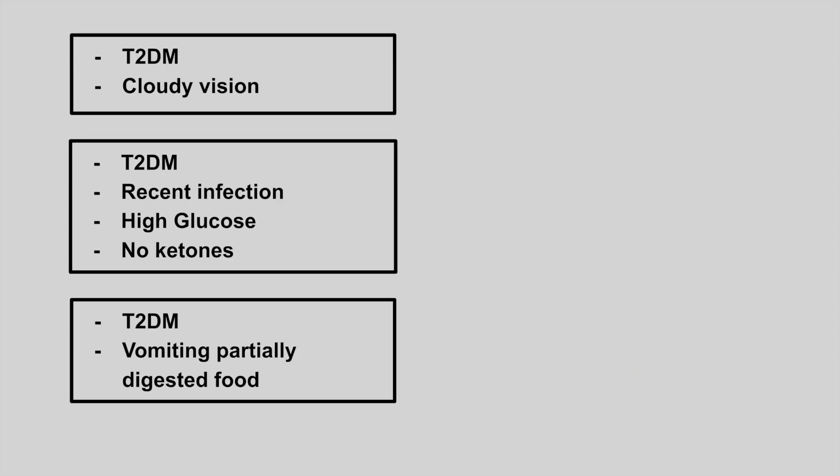The next patient is a type 2 diabetic with cloudy vision. This is cataracts, and remember this is due to sorbitol buildup.